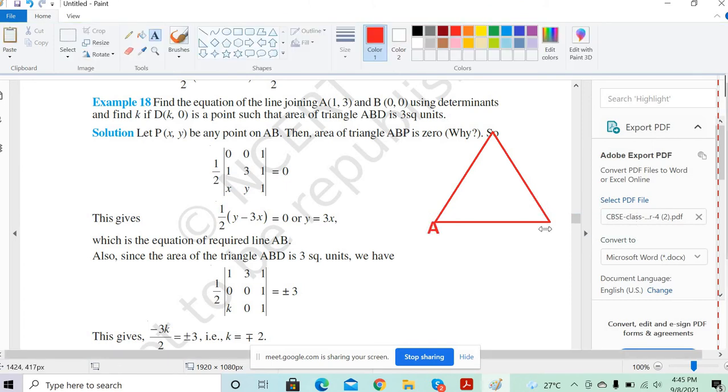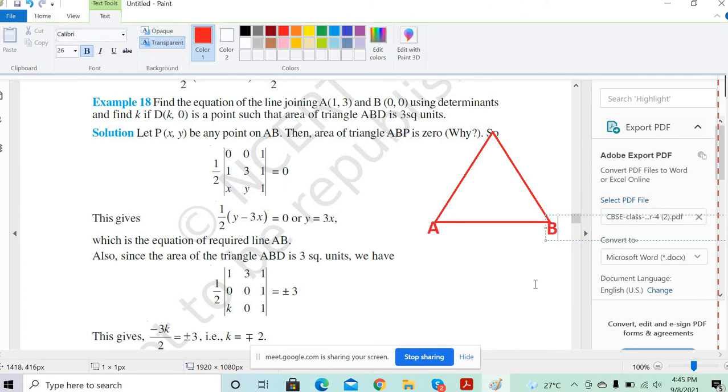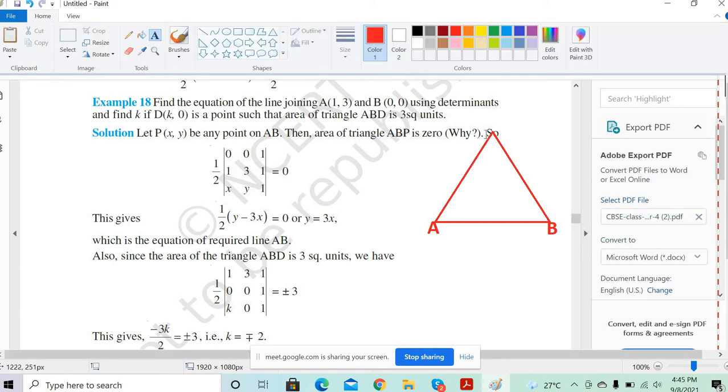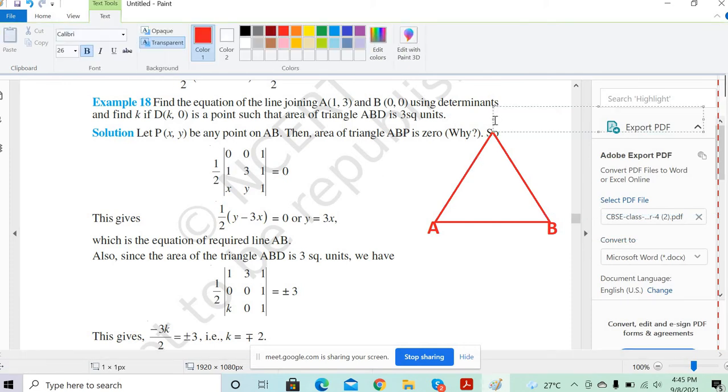So here's A. And here you have B. And D is a certain point. Let's say D is here. And D coordinate you have is k, 0. Correct?